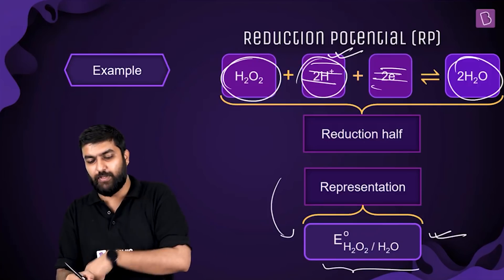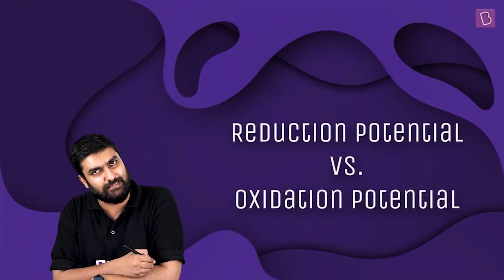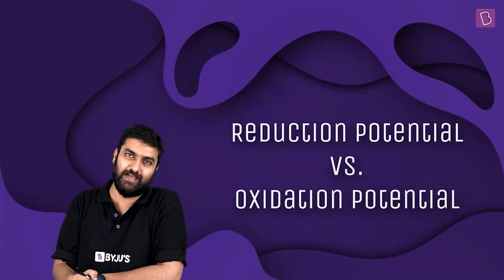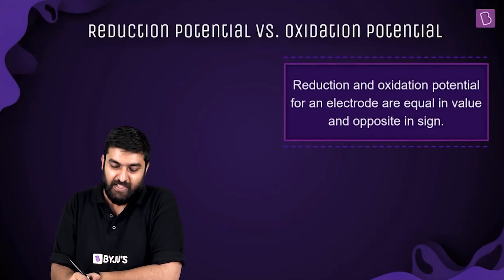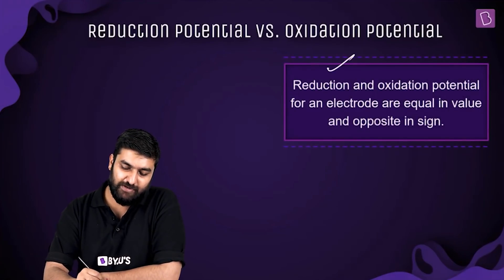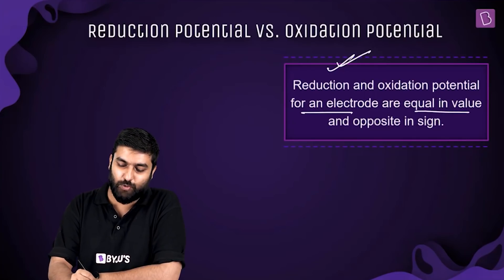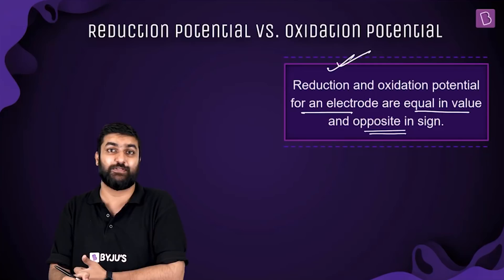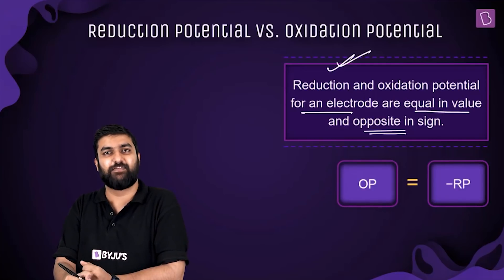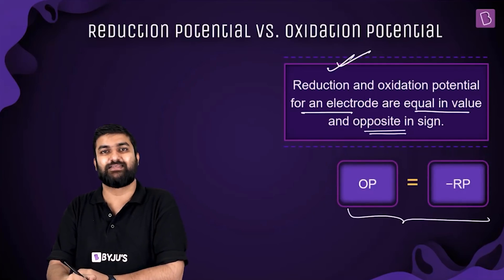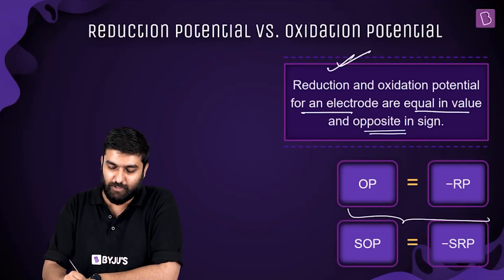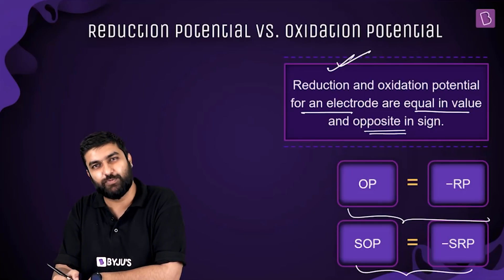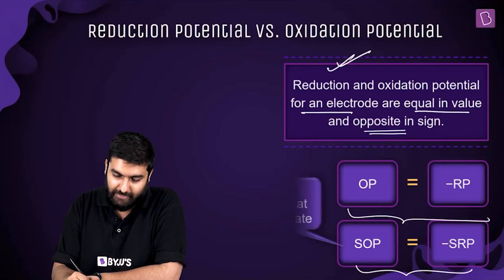Also for the H₂O₂ example in reduction: H₂O₂, H⁺, and H₂O are present, but hydrogen undergoes no oxidation or reduction, so it will not be included in the representation. The representation will only be H₂O₂ and H₂O, with their states mentioned. Reduction and oxidation potential for an electrode are equal in magnitude and opposite in sign — you're essentially flipping the reaction, so oxidation potential equals minus reduction potential.